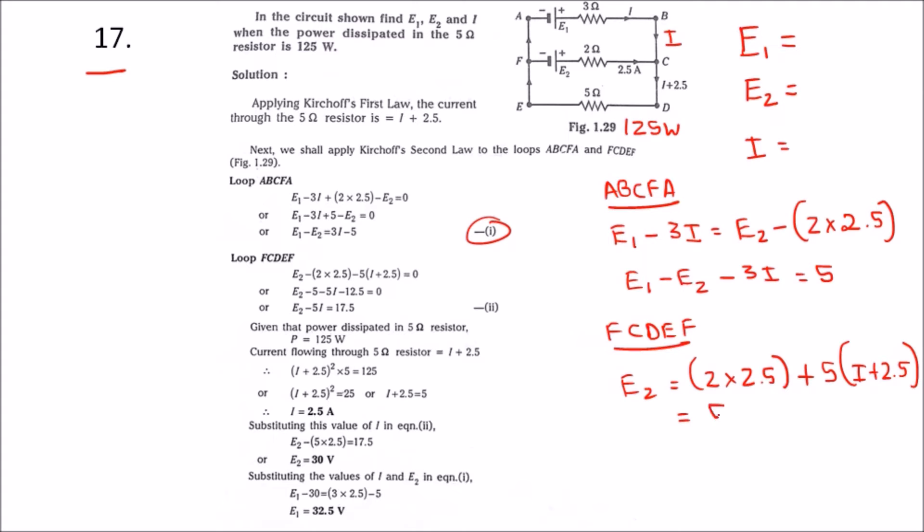When we simplify this, we will get 5 plus 5i plus 12.5.